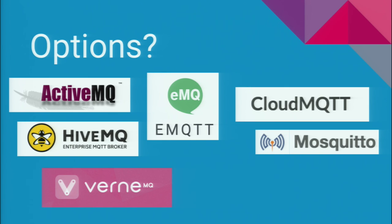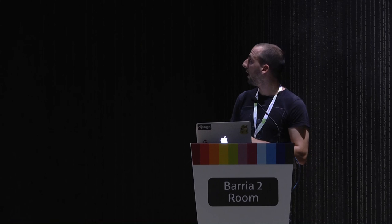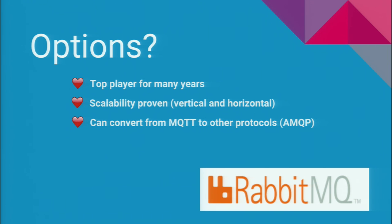First thing: get a broker that supports MQTT. There are a lot of options — ActiveMQ, Mosquitto, EMQTT, VernMQ, HiveMQ, CloudMQ, RabbitMQ. There's not a lot of creativity in the names. Some are paid and already deployed; others you deploy yourself. We chose RabbitMQ for several reasons: it's been a top player for many years, it has proven scalability both vertical and horizontal, it can convert from MQTT to other protocols like AMQP, there's no payment for use, and we were already familiar with it.